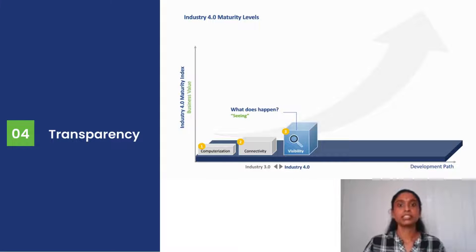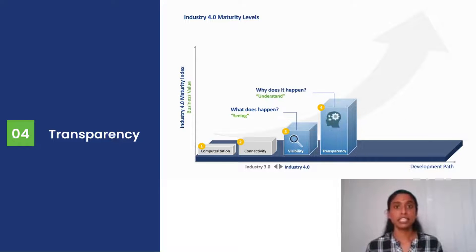Next is the fourth level, termed as Transparency. Transparency says why does it happen. It actually gives the reason why that particular data is being visible. We can understand the data. That is Transparency.